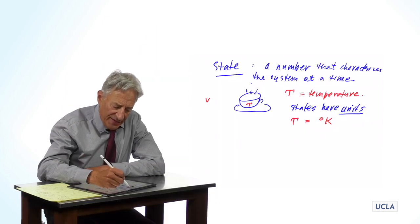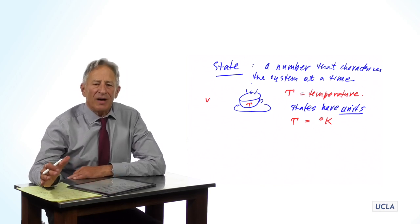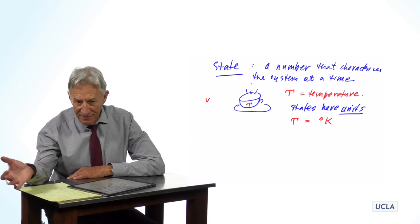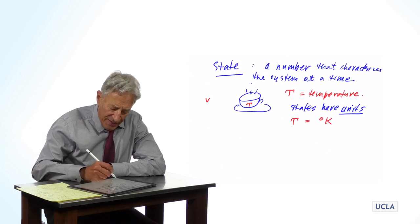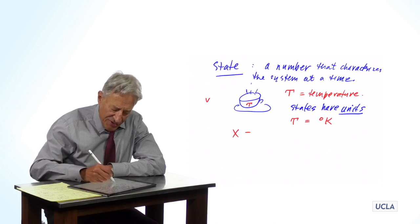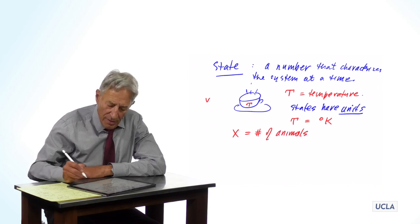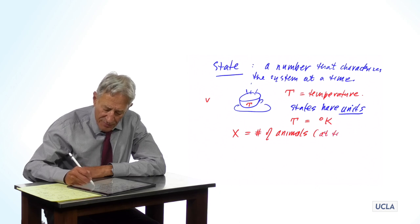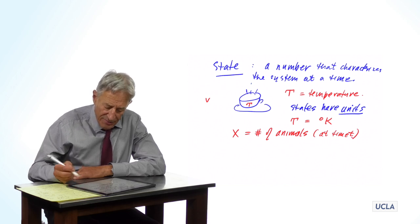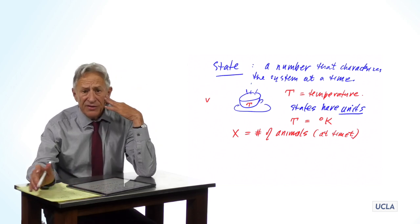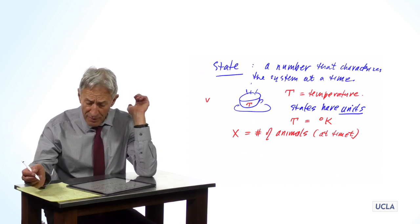In our second example, we could be looking at an animal population — looking at birth and death of animal populations and the ecological changes that occur. In that case, we might have x equals number of animals, and again, always at time t. In this case, the unit is number of animals — x bears or rabbits or whatever it is that we're looking at.